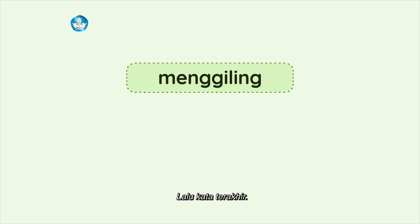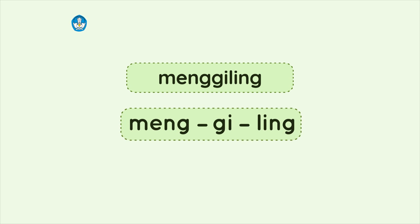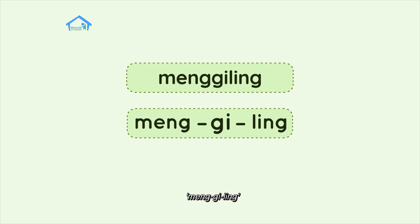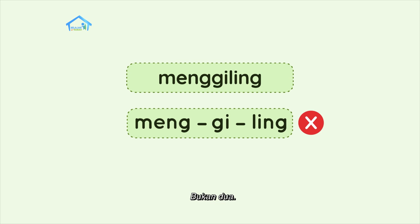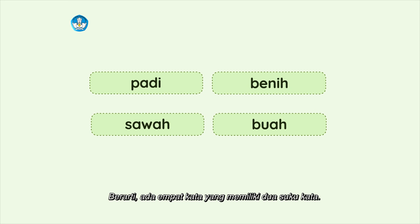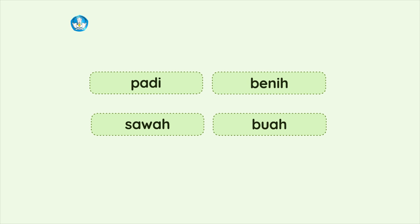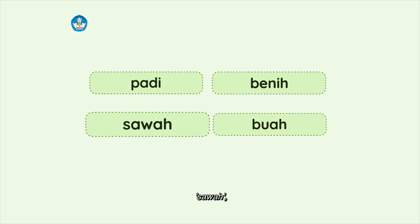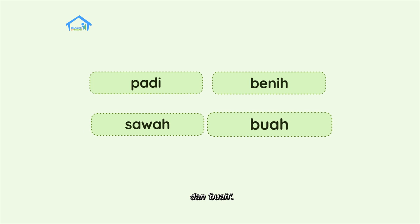Lalu, kata terakhir. Apakah menggiling mempunyai dua suku kata? Meng-gi-ling. Ada tiga suku kata, teman-teman. Bukan dua. Berarti, ada empat kata yang memiliki dua suku kata. Yaitu, kata padi, benih, sawah, dan buah.